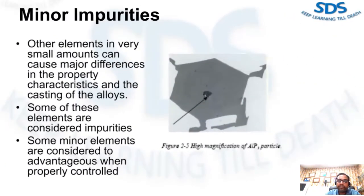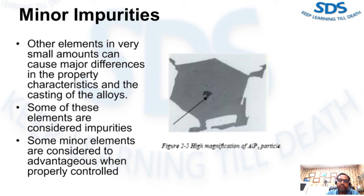Other elements in very small amounts can cause a major difference in the property characteristics and casting of the alloy. Some of these elements are considered impurities and their addition to alloys should be avoided. However, some minor elements are considered advantageous when properly controlled. Tin reduces strength at elevated temperatures and increases hot shortness if allowed to exceed 0.1%. Tin over 0.1% may cause hot cracking during injection and can reduce corrosion resistance. Lead should also be controlled to 0.1% maximum, as it too may reduce corrosion resistance and hot strength. However, both tin and lead are specifically added to some alloys in amounts up to 0.5% to provide free machining characteristics.